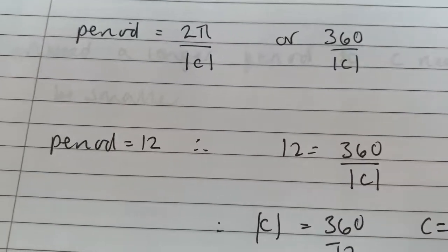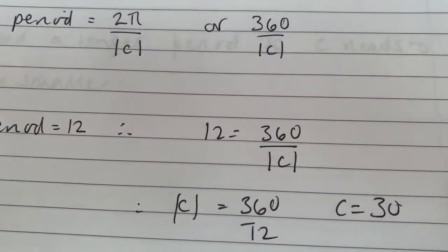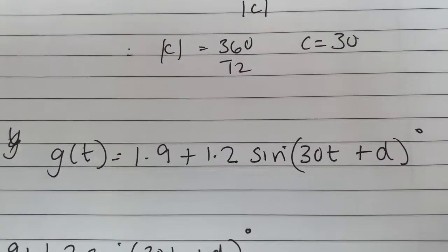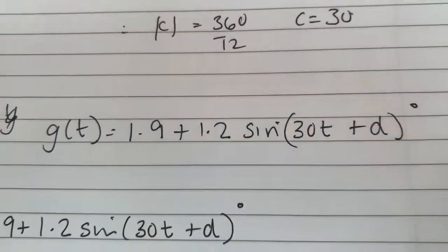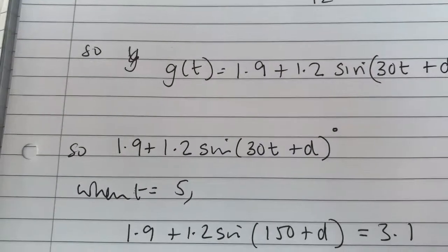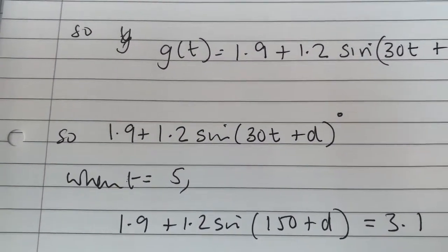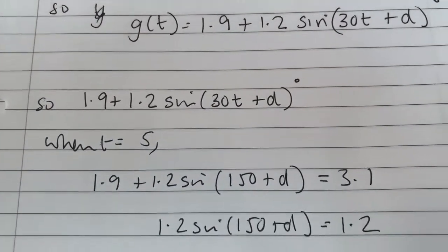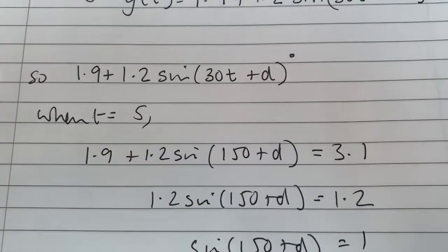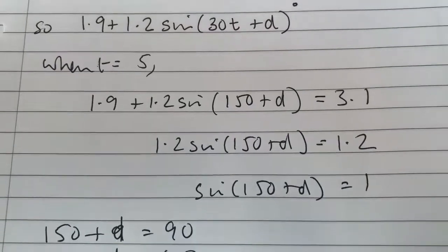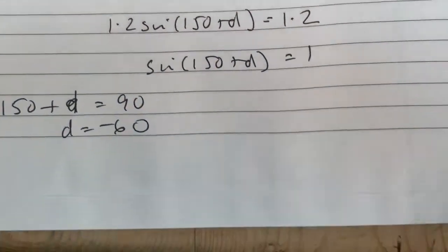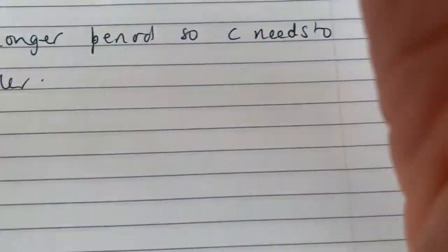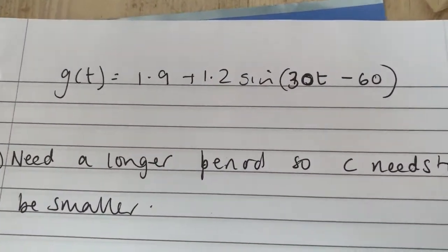The period is 12. It repeats every 12 hours. So 12 is 360 over the modulus of C. Rearrange that. So C must be 30. So I've got it down to this. And then I used the final bit, where you knew that when t is 5, the value you were getting is 3.1. The max height was 3.1. So I substituted in everything that I knew. And then I did some more solving of a trig equation. So I managed to get that down to that where D was minus 60. And if D was minus 60, it all gathered together to make this final equation. So I thought that was a pretty hard question.